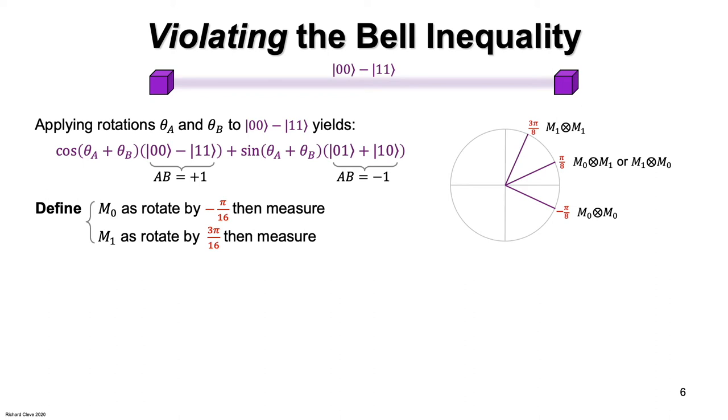This means that the expected value of the product of the measurement outcomes, AB, in the case where at least one of the two measurements is M zero, is the cos squared of plus or minus pi over 8 minus the sine squared of plus or minus pi over 8.